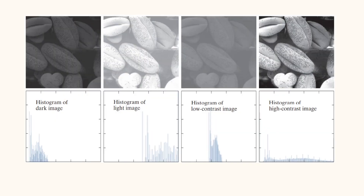An image is given here — we have four different images here. The first one is a dark image, second is a light image, third is a low contrast image, and the last one is a high contrast image. The histogram associated with each of the images is given below it.